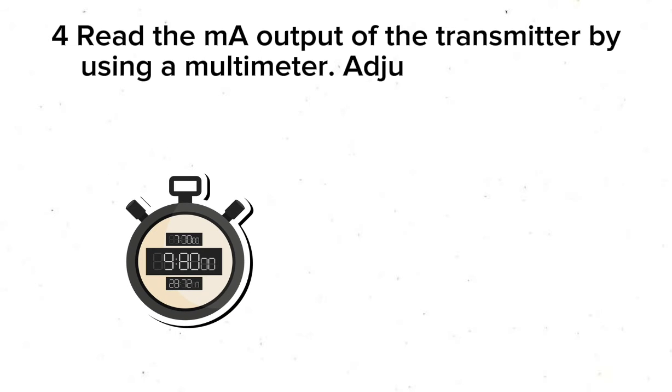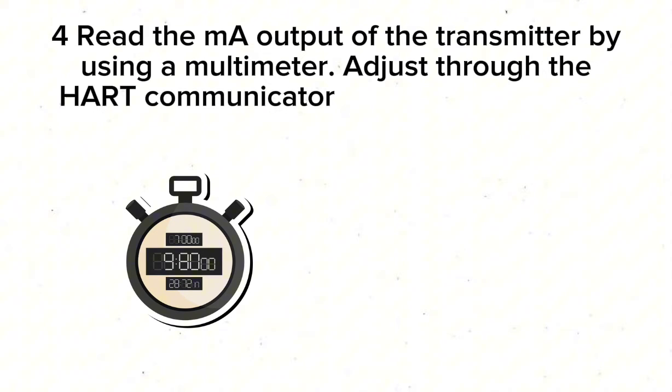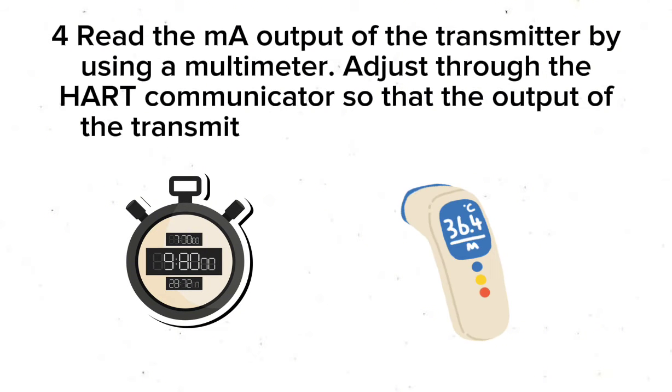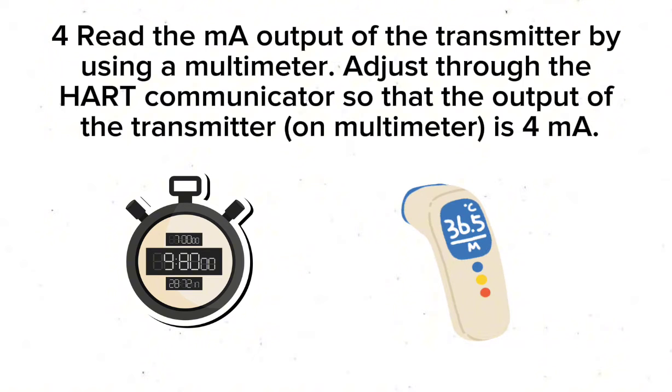Step 4: Read the mA output of the transmitter by using a Multi-Meter. Adjust through the HART Communicator so that the output of the transmitter on Multi-Meter is 4 milliamperes.